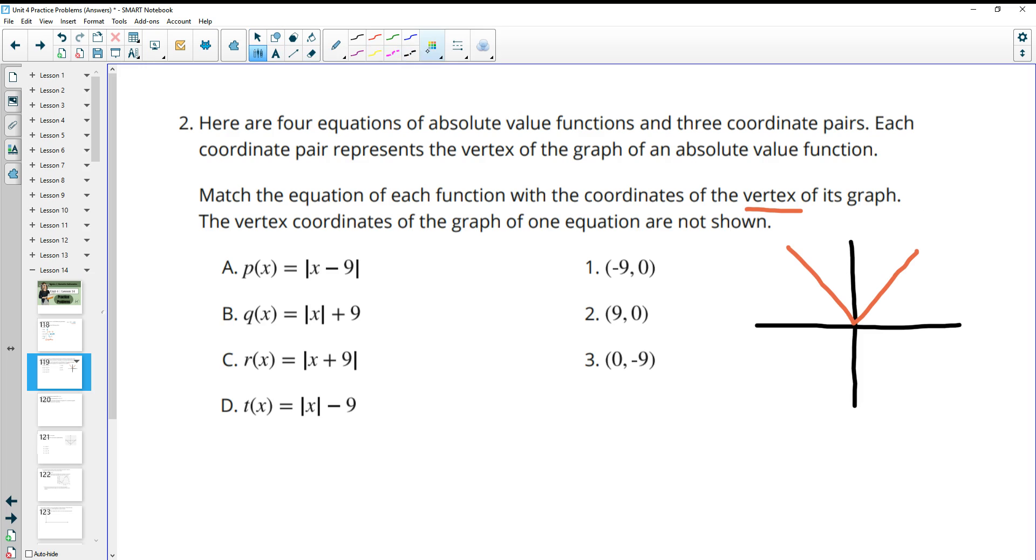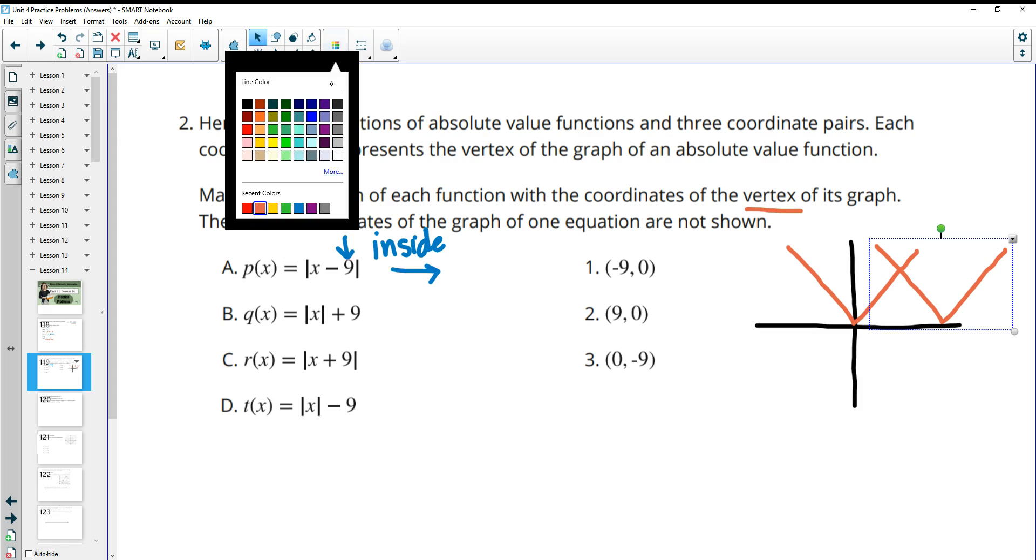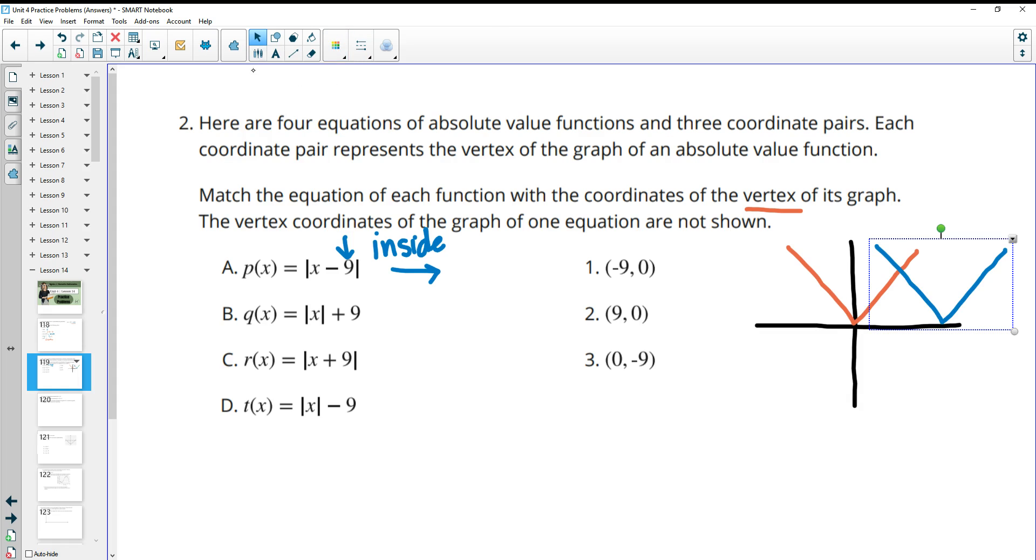And so in this first one, you have the 9 on the inside. So remember when you have numbers on the inside, this moves it left or right. So this is going to move it 9 to the right. So it's just going to grab this graph here, and it's just going to move that vertex 9 to the right. So then the vertex of this one is 9, 0. So that's number 2.